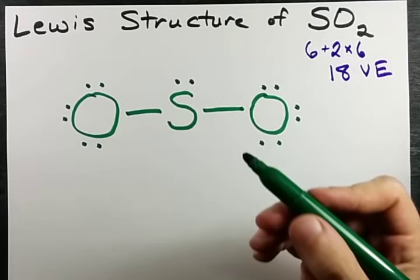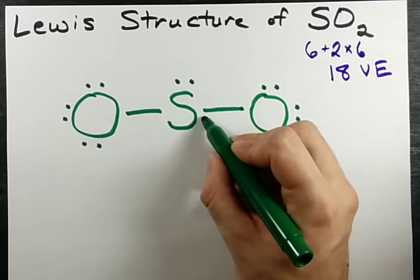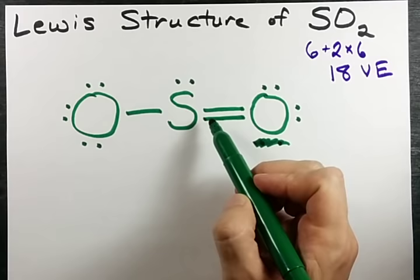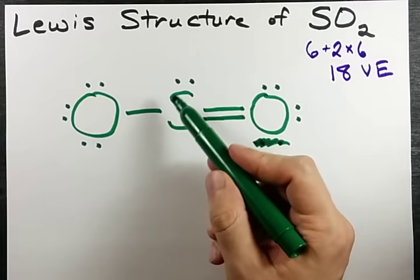The method for getting that to happen is to take 2 electrons from one of the oxygens and creating a double bond so that those 2 electrons are shared. This sulfur now has 2, 4, 6 electrons in bonds, 2 electrons in this lone pair. That gives 8 total. And this sulfur satisfies the octet rule.